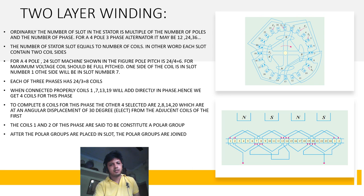Hence we get 4 coils for this phase. To complete 8 coils for this phase, the other 4 selected are coils 2, 8, 14, and 20, each at an angular displacement of 30 degrees electrical from the adjacent coil of the first group. Coils 1 and 2 of this phase constitute a polar group, defined as a group of coils per phase per pole. Other polar groups of this phase are 7 and 8, 13 and 14, 19 and 20, etc.